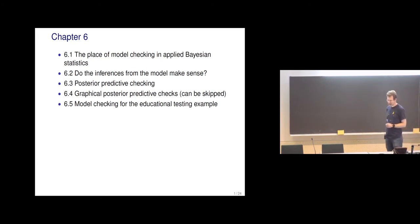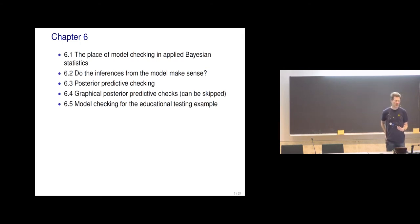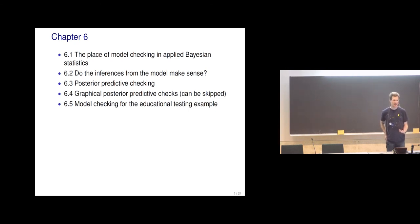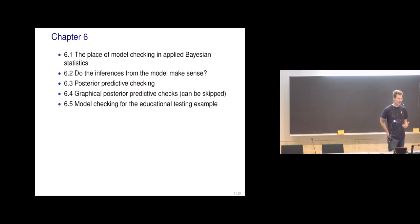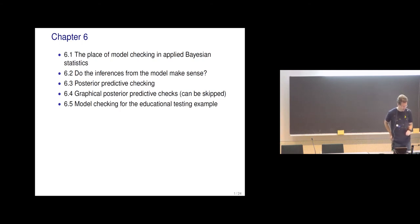Chapters 6 and 7 are kind of a pair. They both discuss model checking and evaluating models, but the difference is that chapter 6 is something we can do already with just one model. Chapter 7 is also about comparing models, but some things from chapter 6 can be used in addition to the cross-validation things in chapter 7.